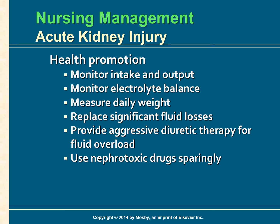Health promotion in the hospital: factors that increase the risk for developing AKI include pre-existing chronic kidney disease, older age, massive trauma, major surgical procedures, extensive burns, cardiac failure, sepsis, and obstetric complications. Carefully monitoring intake and output, maintaining fluid balance and electrolyte balance is essential. Assess and record extra-renal losses of fluid from vomiting, diarrhea, hemorrhage, and increased insensible losses. Prompt replacement of significant fluid losses will help prevent ischemic tubular damage. Intake and output records and daily patient weight provide valuable indicators of fluid volume status.